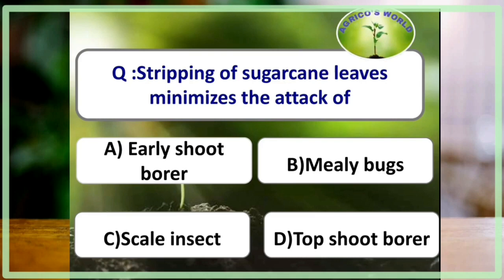Red cotton bug, Dysdercus singulatus, lays eggs in the soil. Stripping of sugarcane leaves minimizes the attack of sugarcane mealybug, Saccharicoccos sacchari.